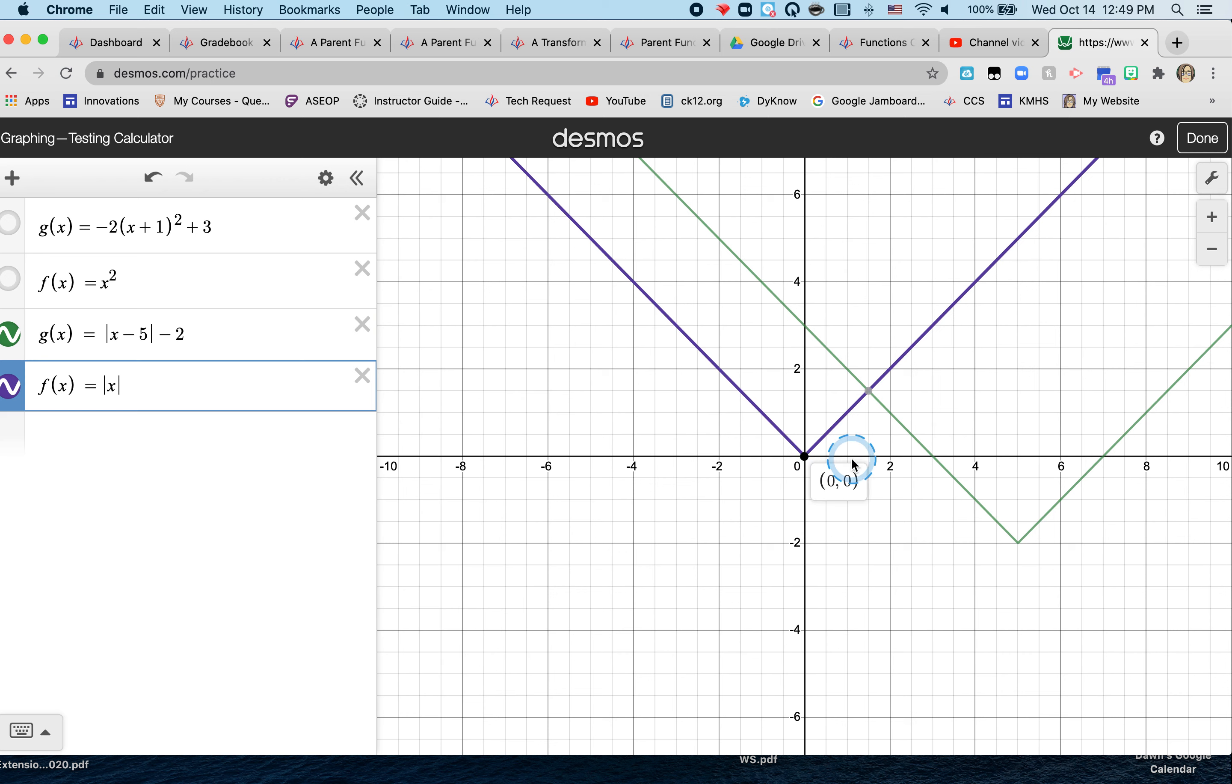So now I have a purple graph, which is my parent function, the absolute value of x. And then the g(x). I'm going to click on the vertices for both again.